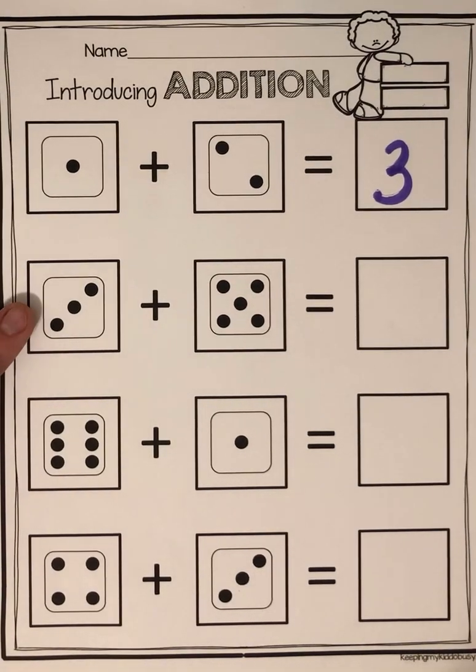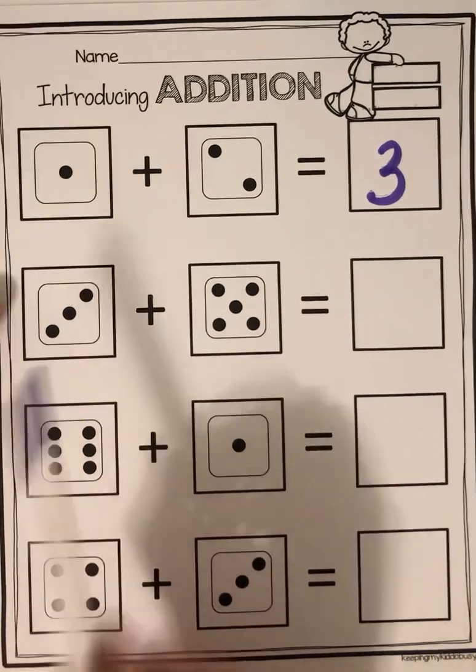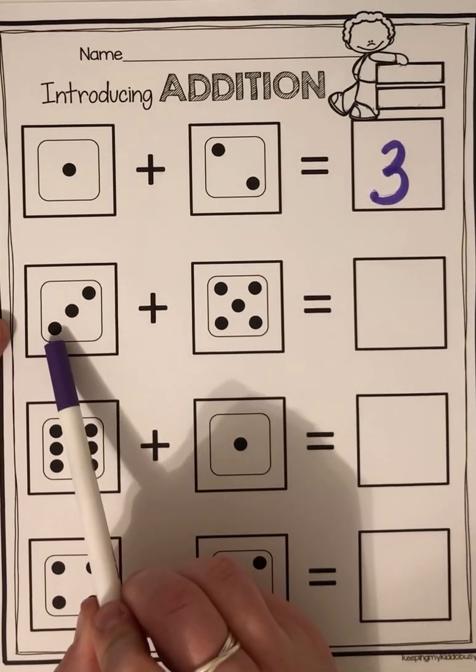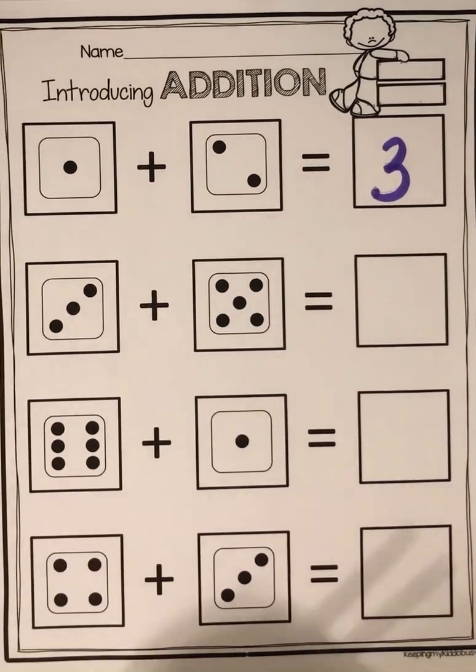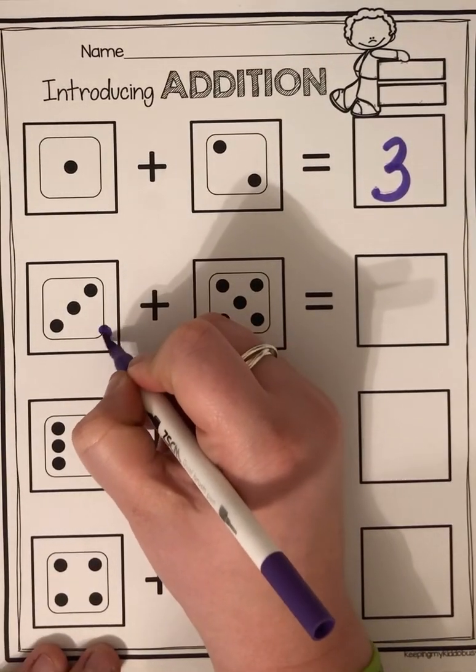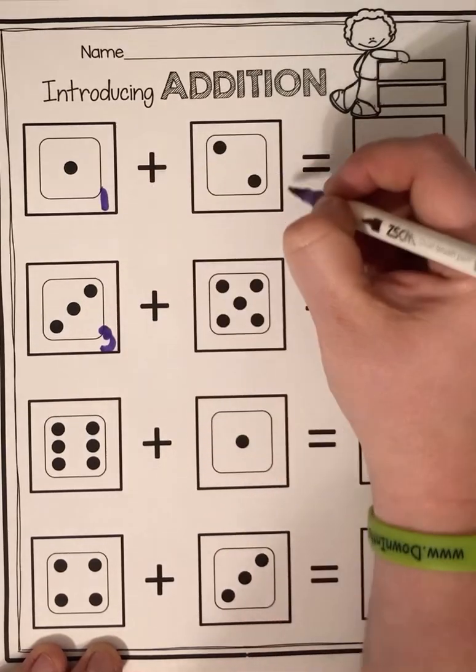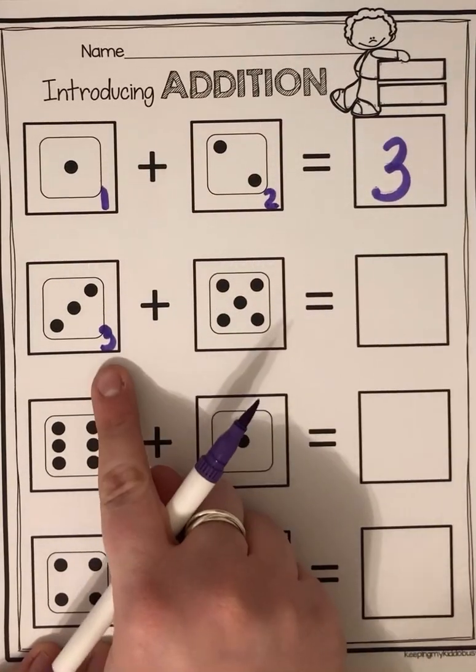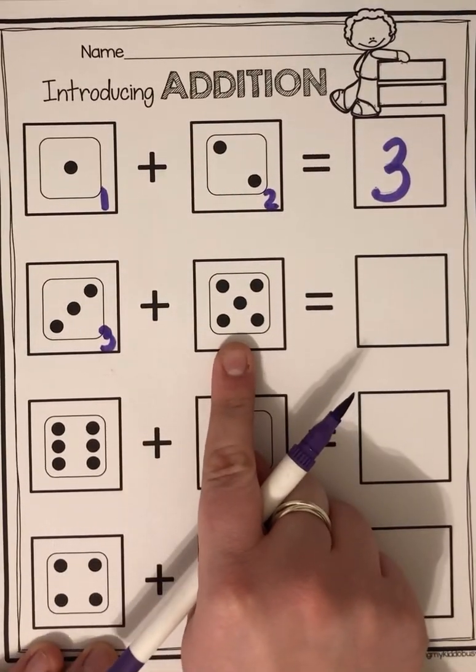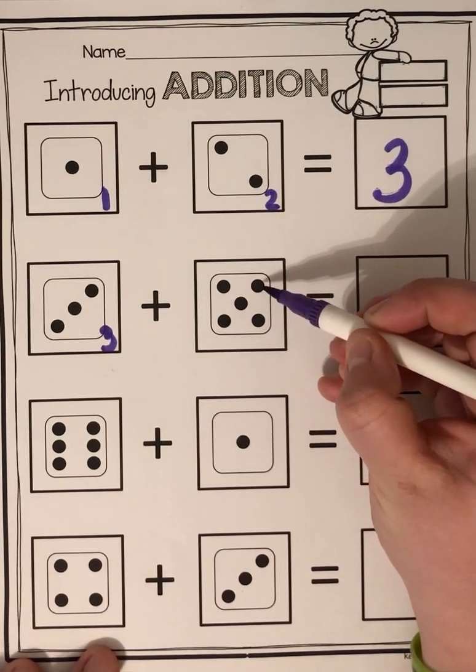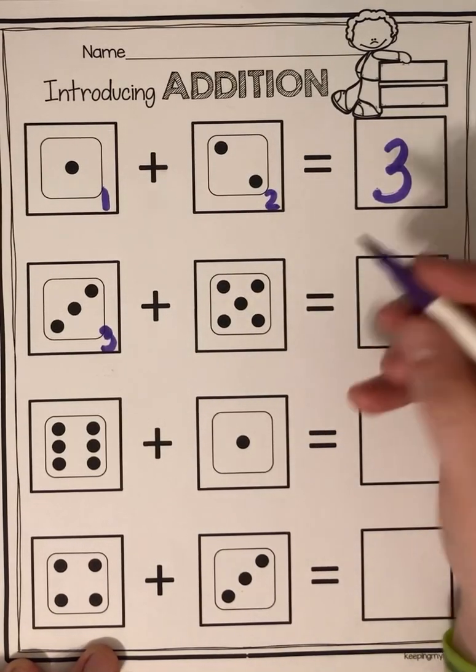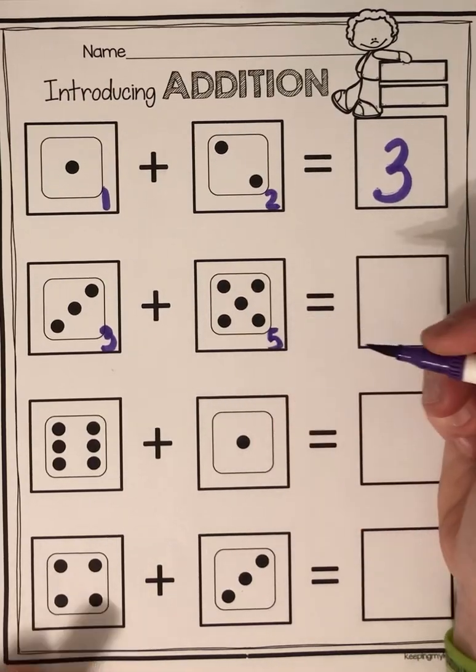Now I want to know how many are on this one. Can you count them? One, three. You got it. So I'm going to write my number three right in my box. I forgot to write them up here. Three plus, how many are on this dice? Five.